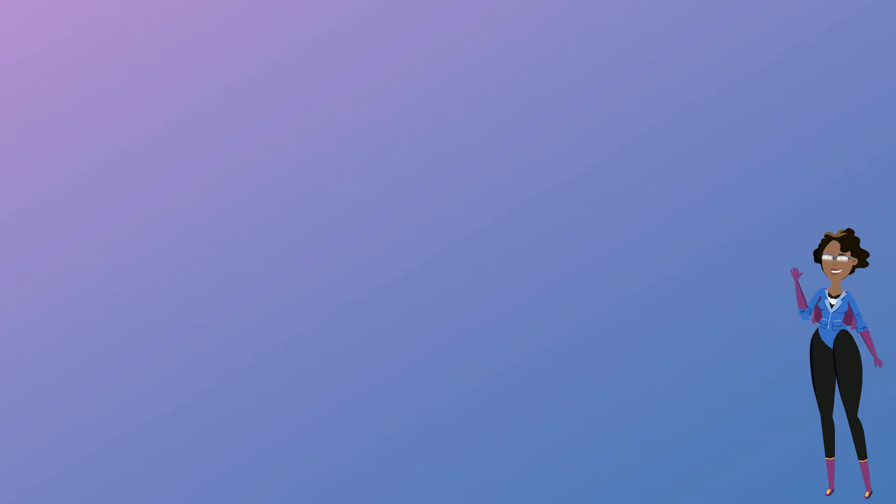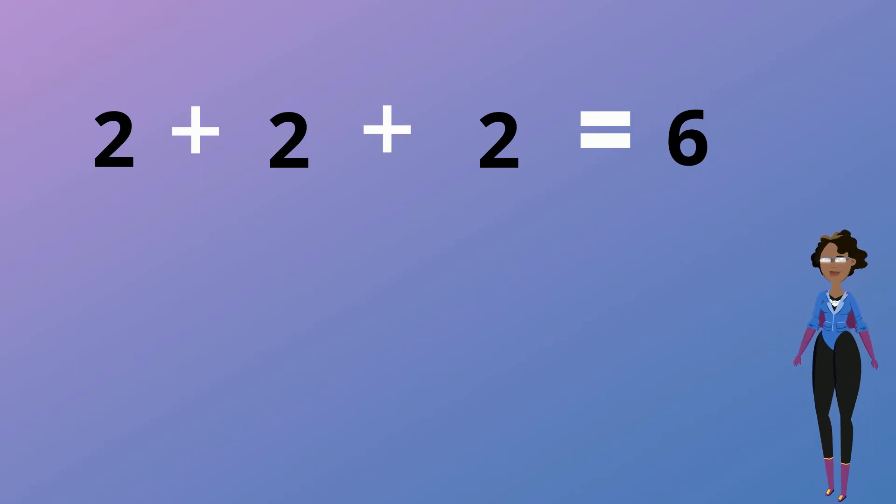Our first number in this multiplication number sentence tells us how many sets of a given number we added. And the second number tells us what number we added. So instead of writing 2 plus 2 plus 2 is equal to 6, we can simply write 3 multiplied by 2 which represents the 3 sets of 2 which is also equal to 6.